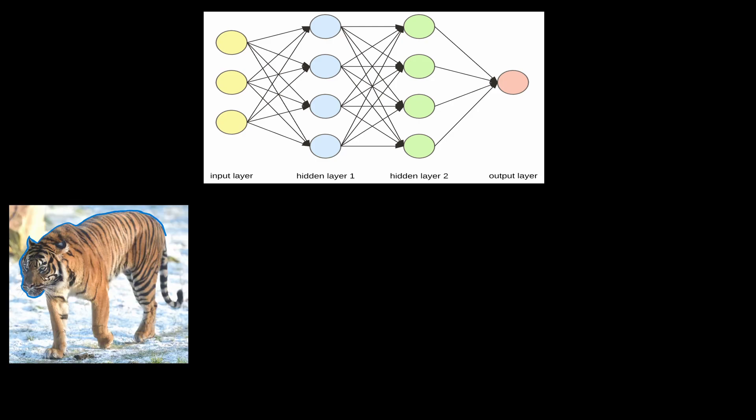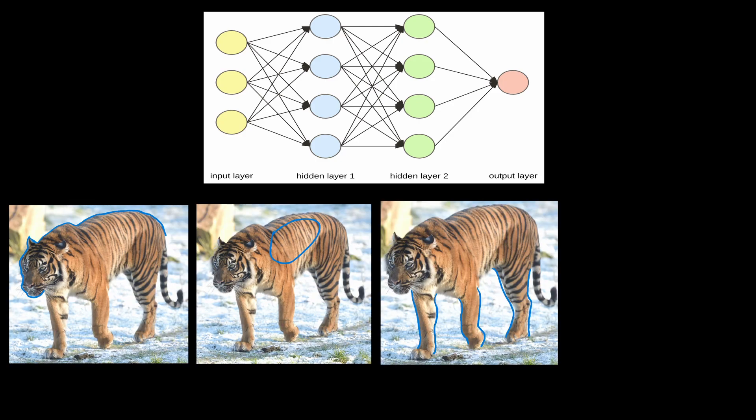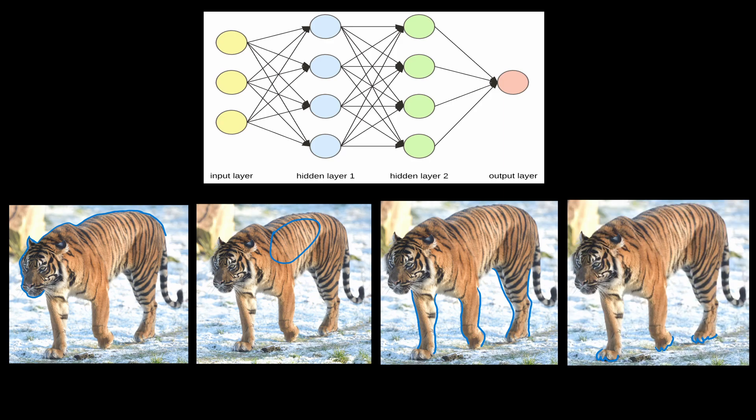For example, one hidden layer is responsible for edge detection, another hidden layer maps the colors, and another one counts the legs or maybe even detects the claws.